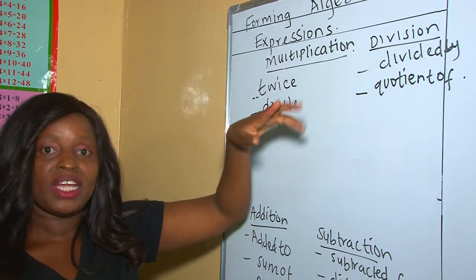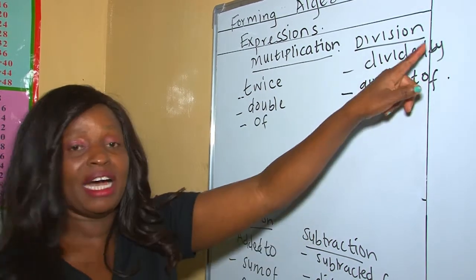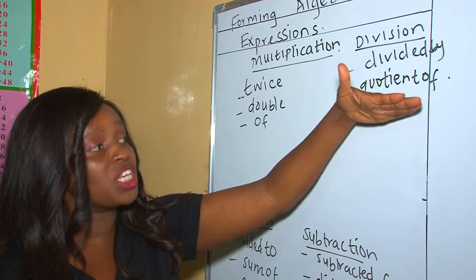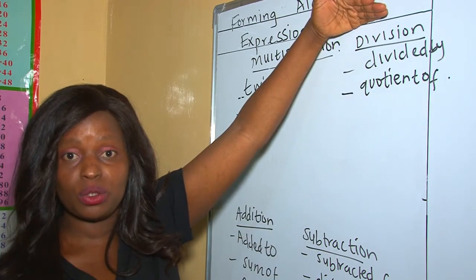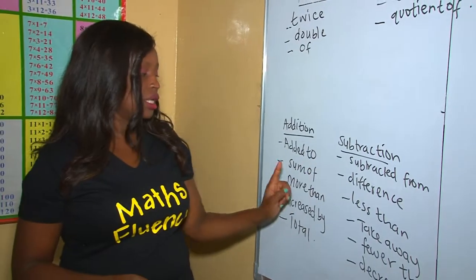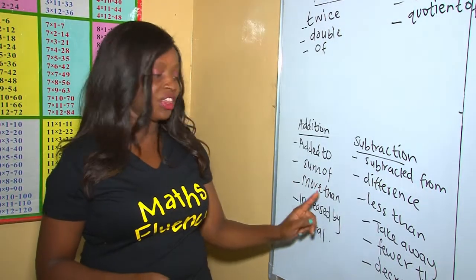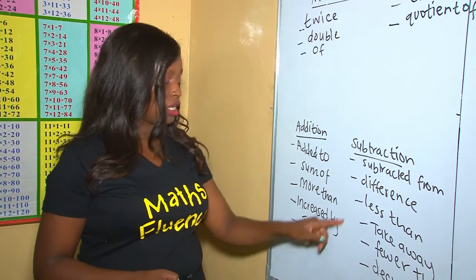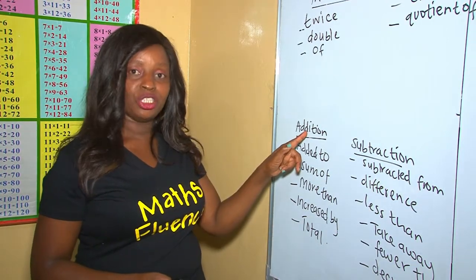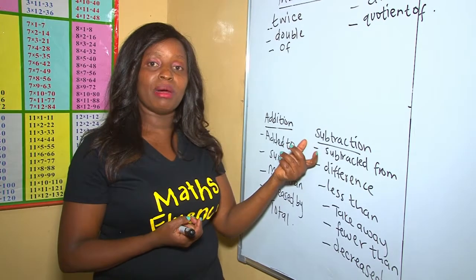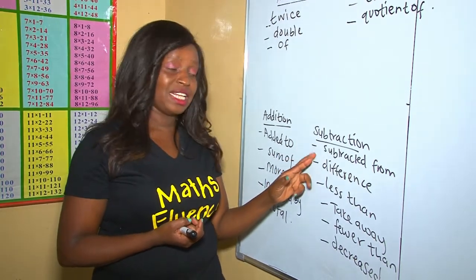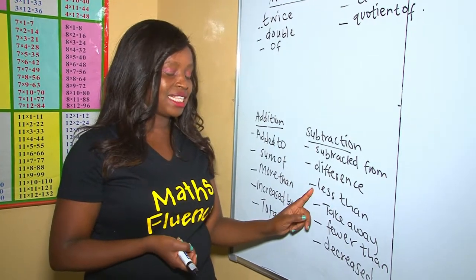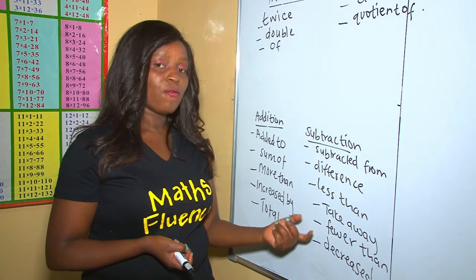Also, in case you come up with a phrase like divided by and also quotient of, these two take you to division. Added to, sum of, more than, increased by, or total, they mean addition.